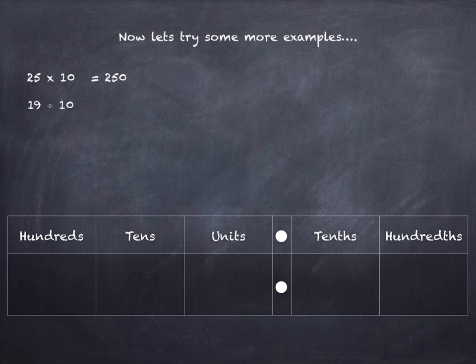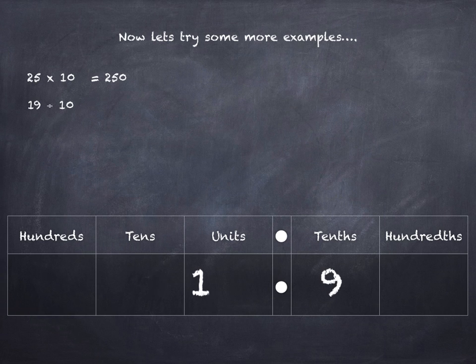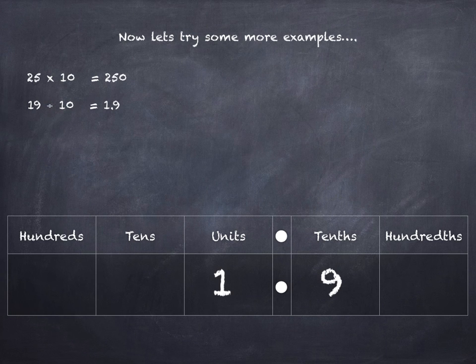19 divided by 10. There's our 19 into the tens and units. Dividing so we're going to the right — one place each to the right gives us 1.9. 19 divided by 10 is 1.9.